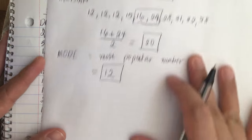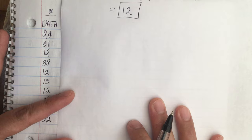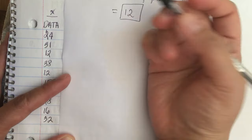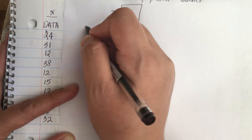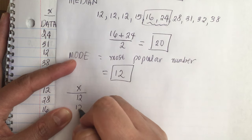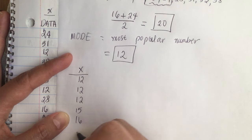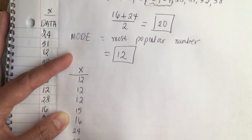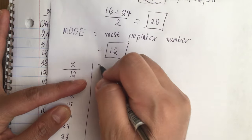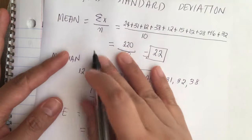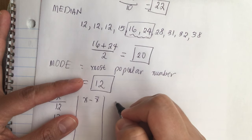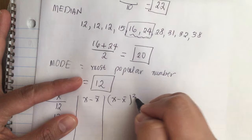To find the standard deviation, we need to make columns. The first column is x — I'll rewrite the data in ascending order: 12, 12, 12, 15, 16, 24, 28, 31, 32, 38. Then we need a column for x minus x-bar, where x-bar is the mean, and another column for (x minus x-bar) squared.